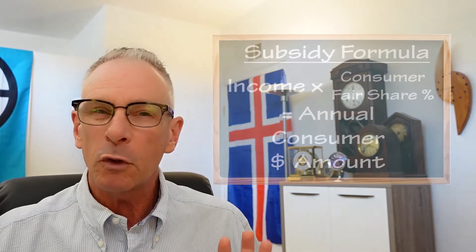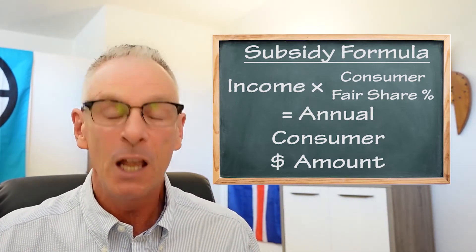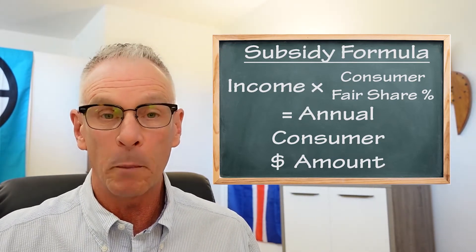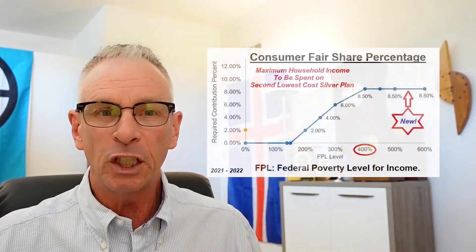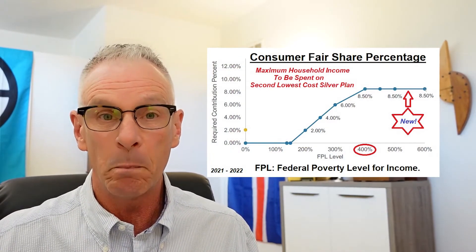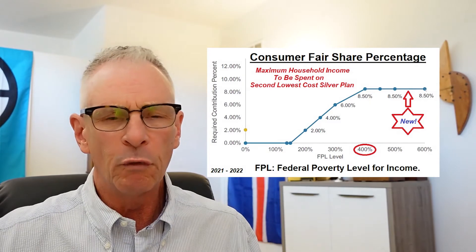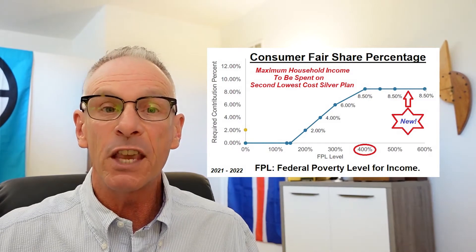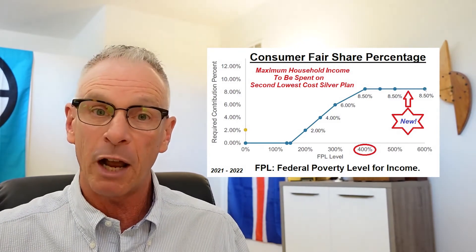So the subsidy formula: the first step is you're going to take that income that you've determined — that Modified Adjusted Gross Income — times that Consumer Fair Share. And that gives you an annual consumer dollar amount that you are responsible for. There is a specific curve, updated most recently with the American Rescue Plan. As you can see, as the income as a function of the federal poverty level goes up, the percentage which the household should pay for health insurance also increases.